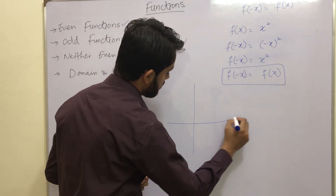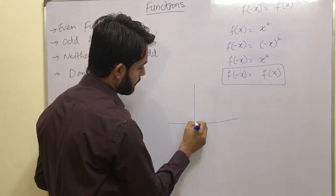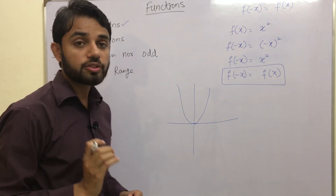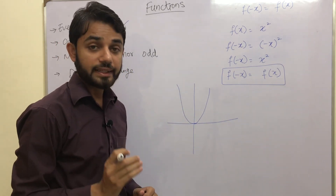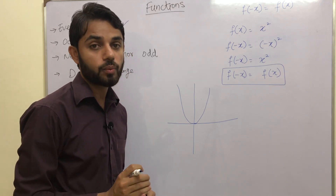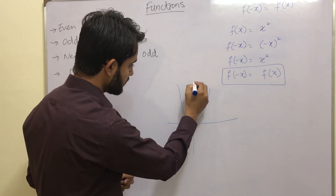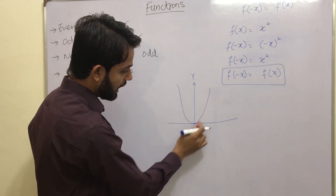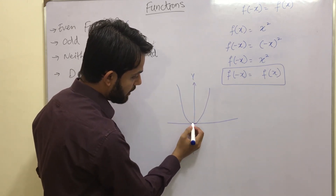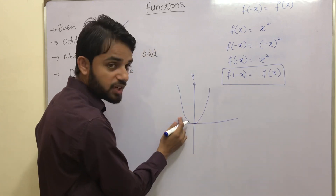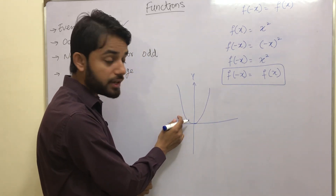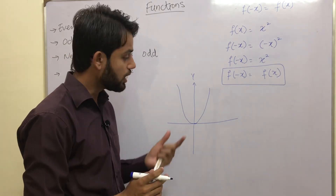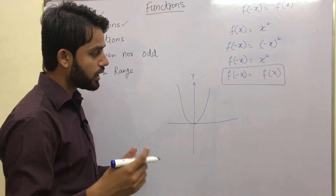The graph of y = f(x) = x² is an upward parabola. All even functions are symmetric along the y-axis. If you look at the graph of y = x² you will realize that on the y-axis the graph on the right-hand side and the left-hand side are exactly the same — it's like a mirror. So all even functions are symmetric along the y-axis.